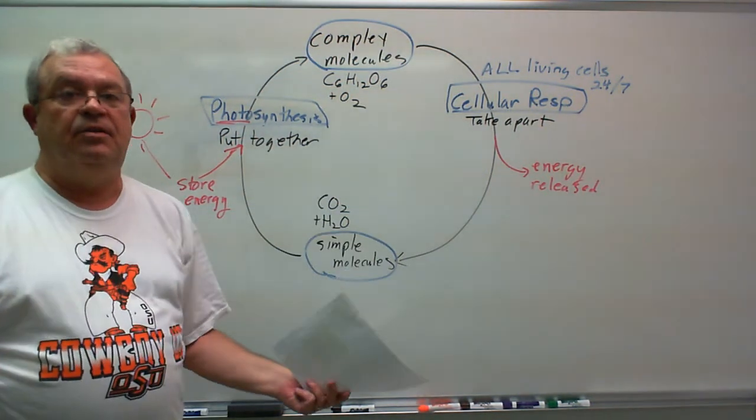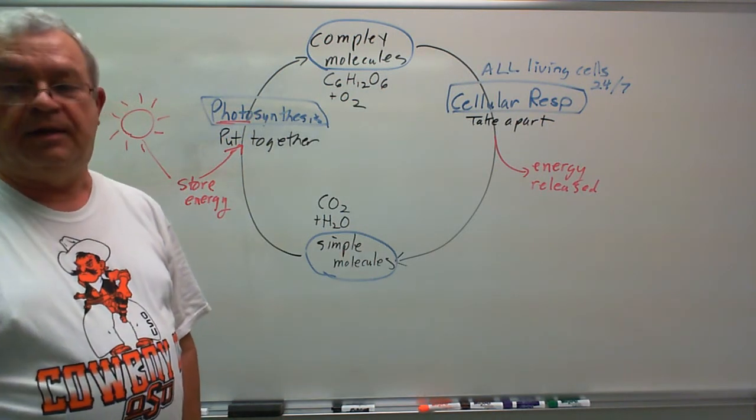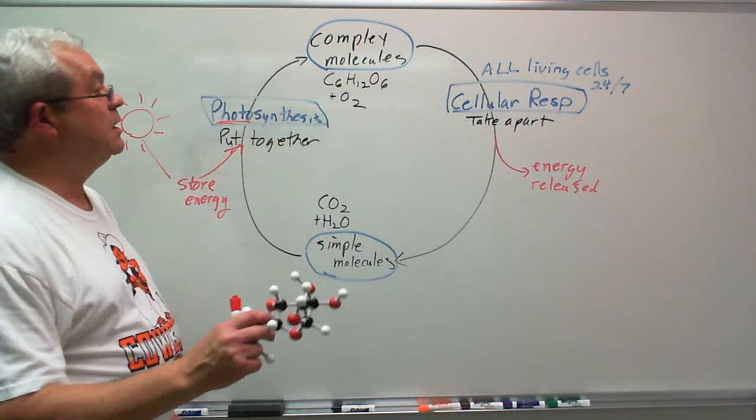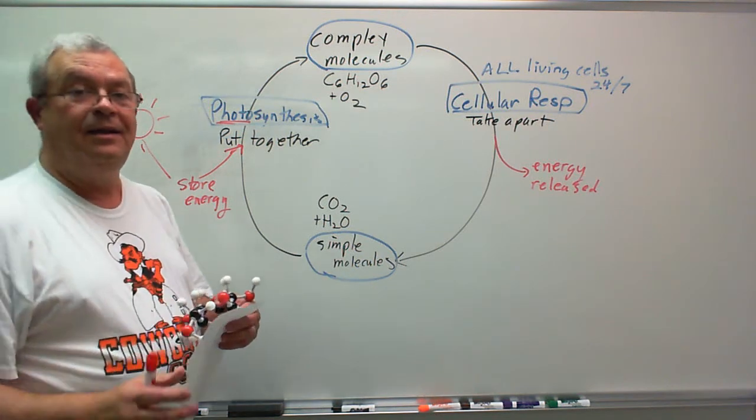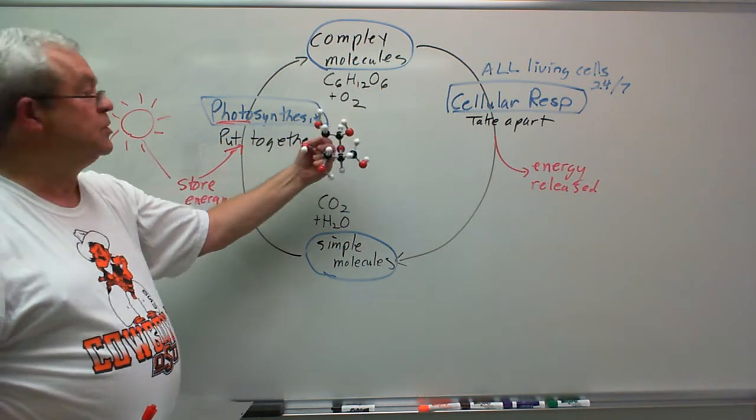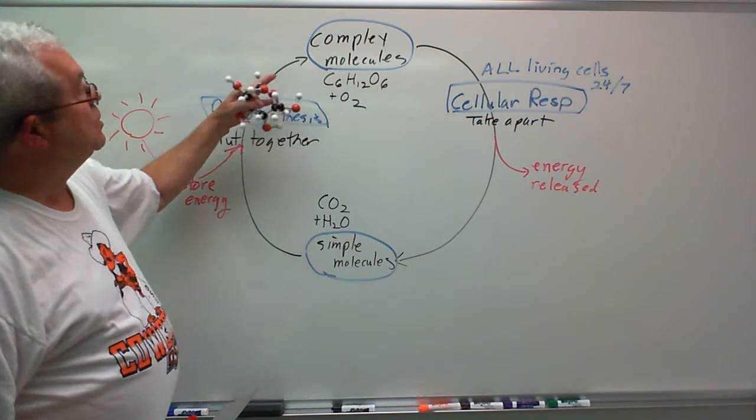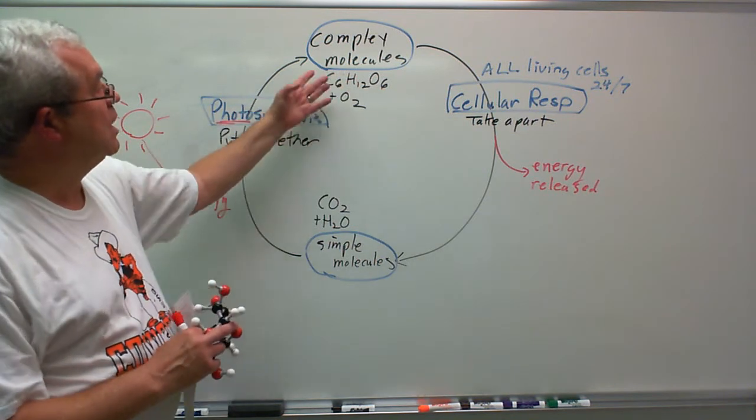Oxygen. Every bit of oxygen you and I are sucking in, it was produced by a green thing out there. Thank you, green things. And then, what do plants produce? What's the complex molecule produced? Good old glucose. And so, photosynthesis produces these two. Glucose and oxygen.